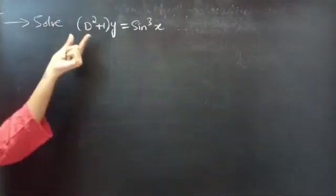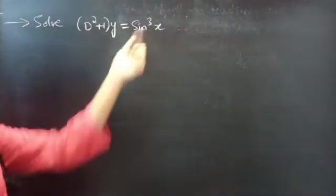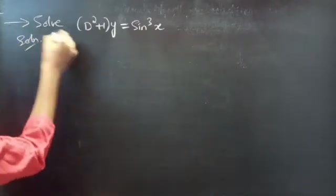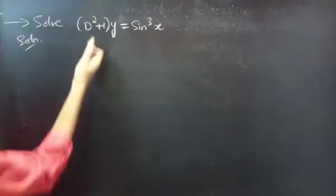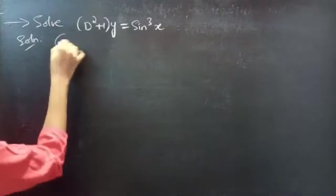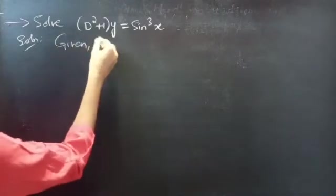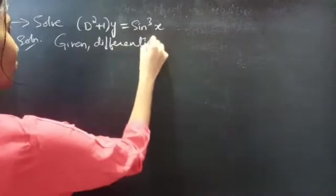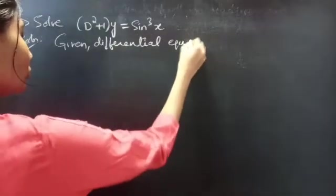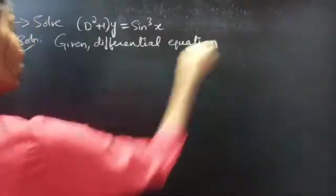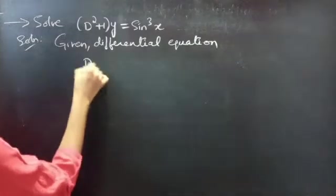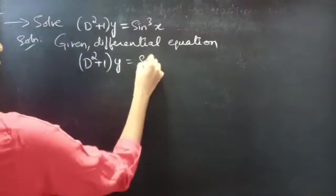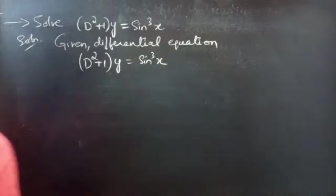Problem: Solve (D² + 1)y = 2 sin³x. Solution: Firstly, let's find the order and degree of the given differential equation. The given differential equation is (D² + 1)y = 2 sin³x.